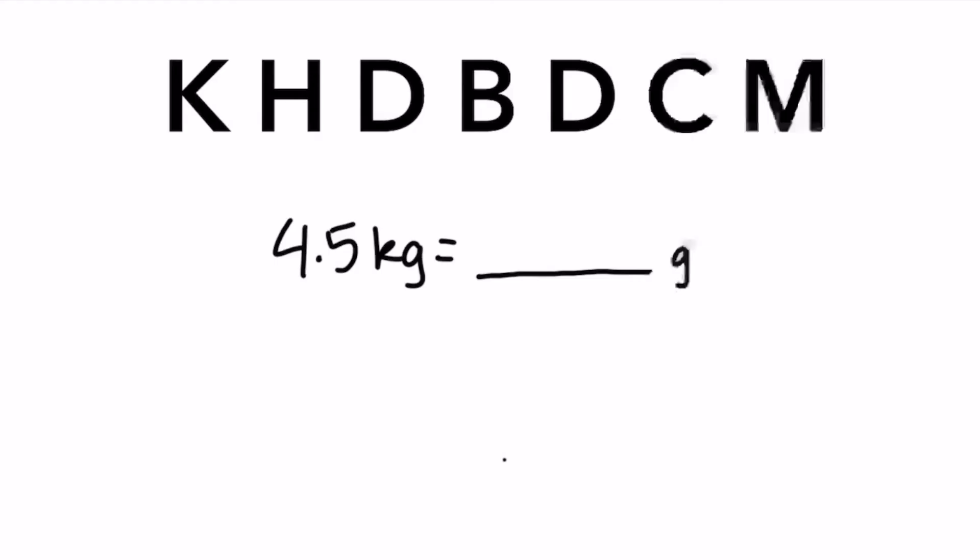In this example, we're going to convert 4.5 kilograms into grams. So starting with kilograms and going to grams. Grams is our base unit. So we're moving from kilo to the base. We're going to move one, two, three times to the right. So if we write out our number, 4.5,